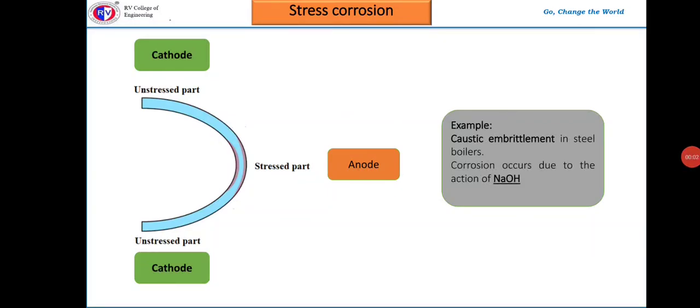Stress corrosion, also known as stress corrosion cracking, refers to cracking of a metal caused by the combined effect of tensile stress and a specific corrosive environment. During stress corrosion, the metal or alloy is virtually unattacked over most of its surface while fine cracks progress through it, normal to the direction of tensile stress. During fabrication, a metal is subjected to mechanical operations such as bending, welding, or riveting, and stress can also come from external forces during service conditions.